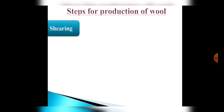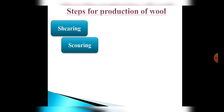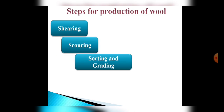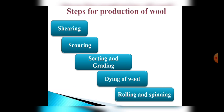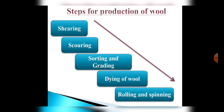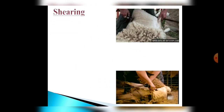The first step is shearing. Second is scouring. Third is sorting and grading. Next is dyeing or coloring of wool. And the last step is rolling and spinning. So these are the steps for the production of wool. Now let's discuss these steps in detail.